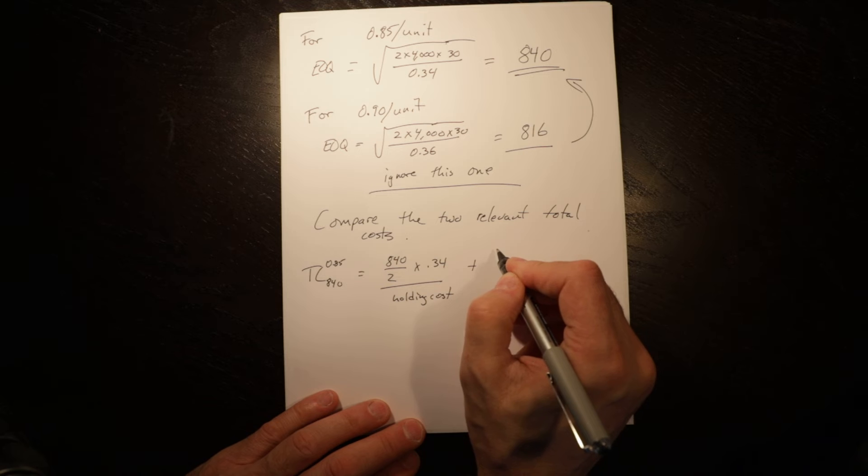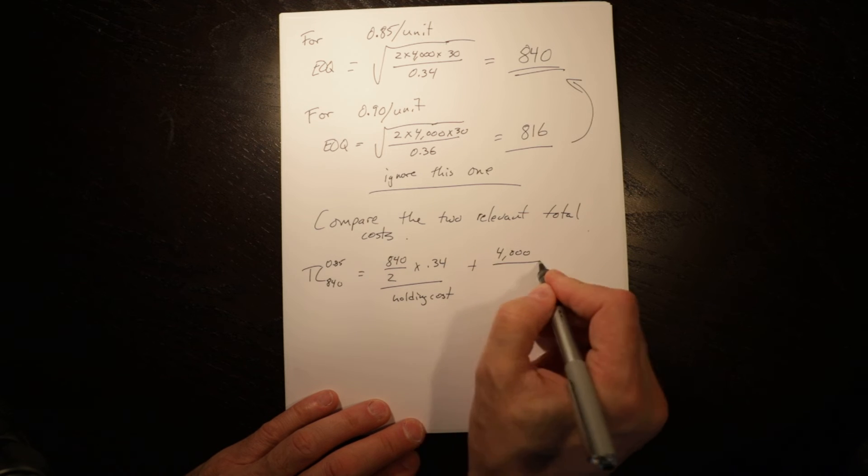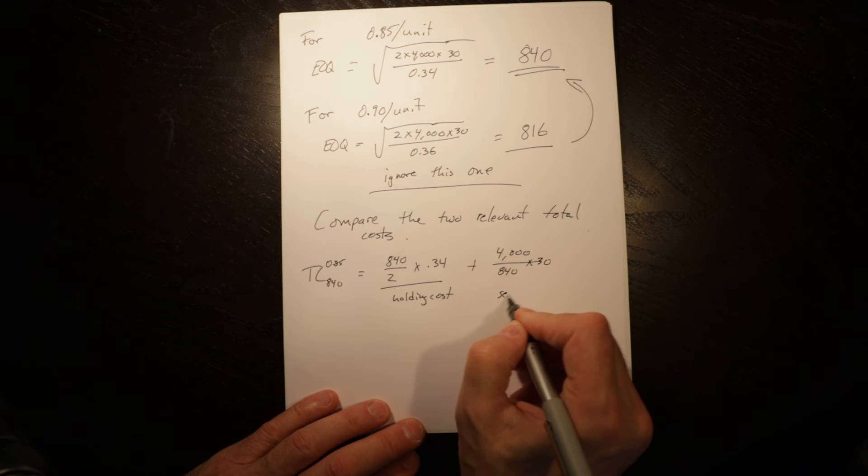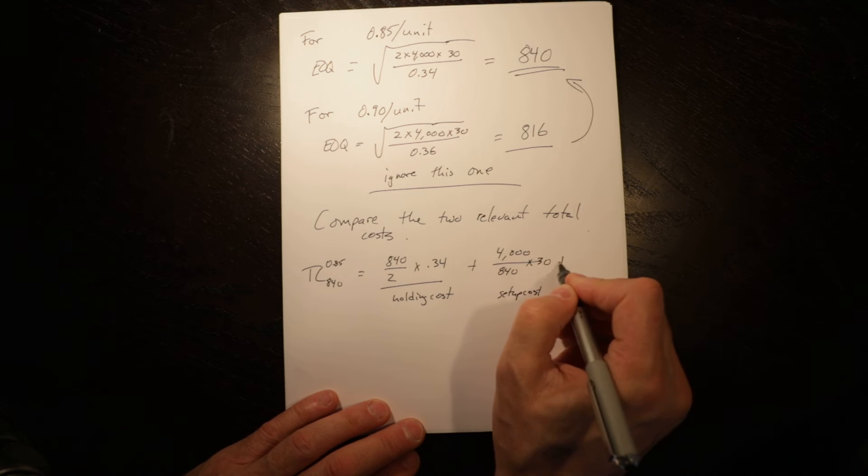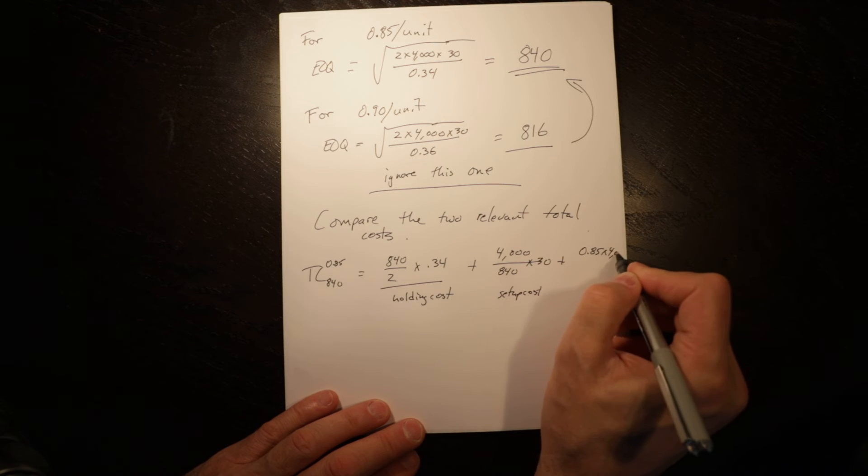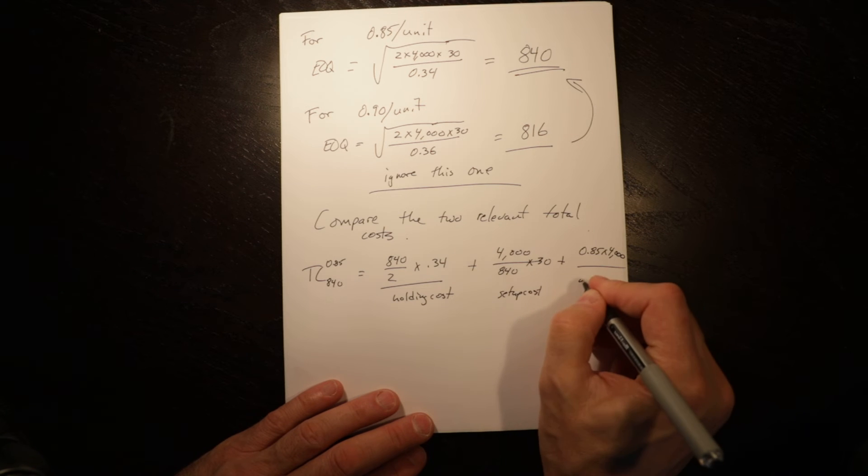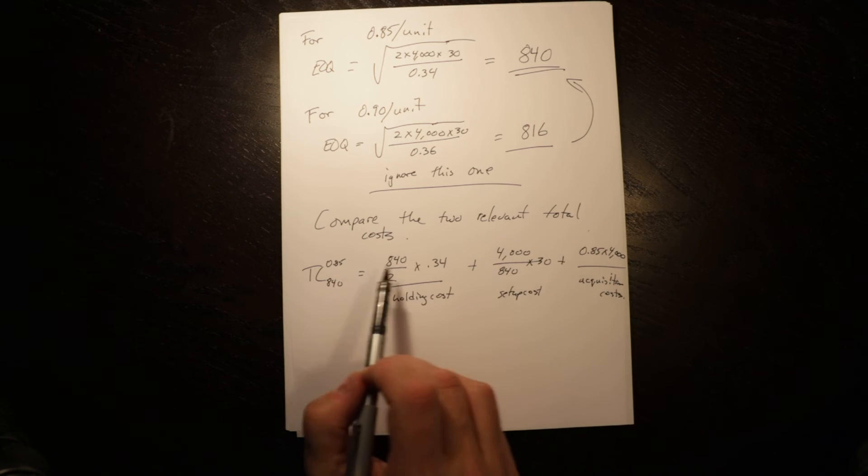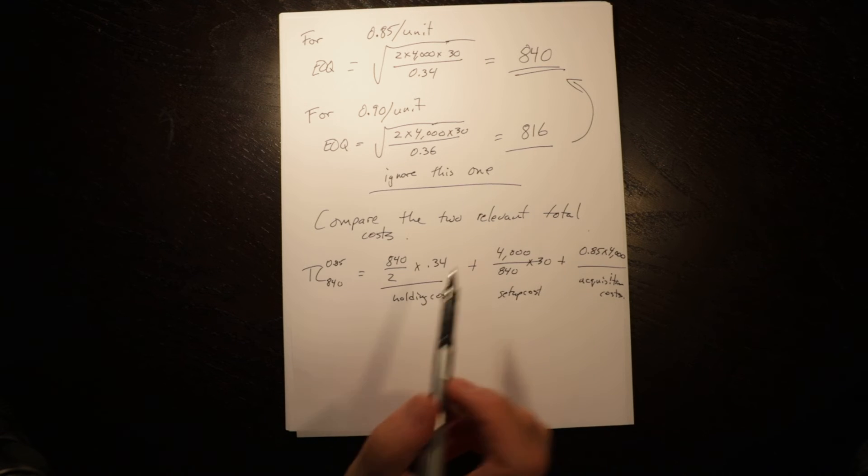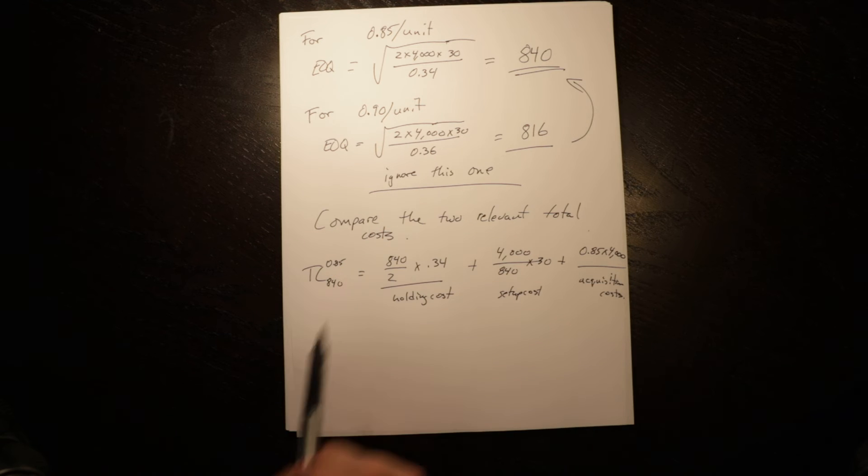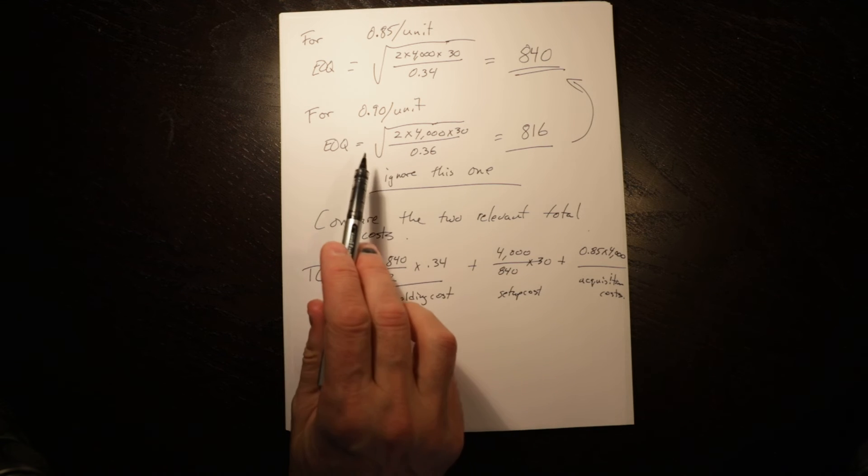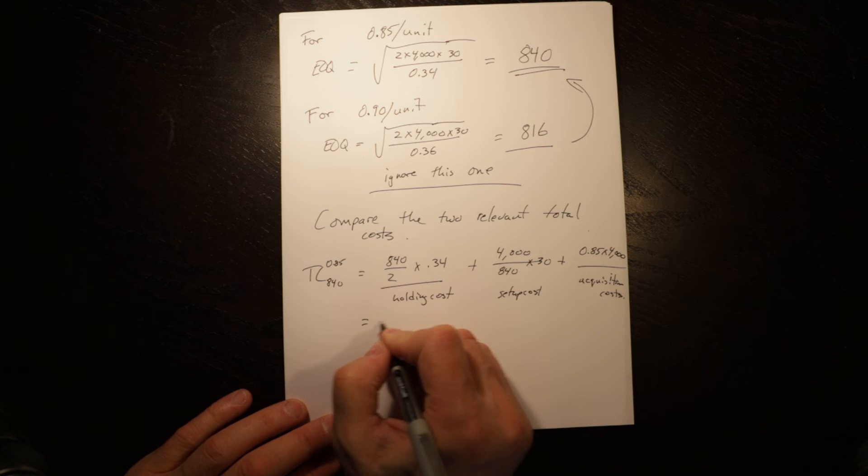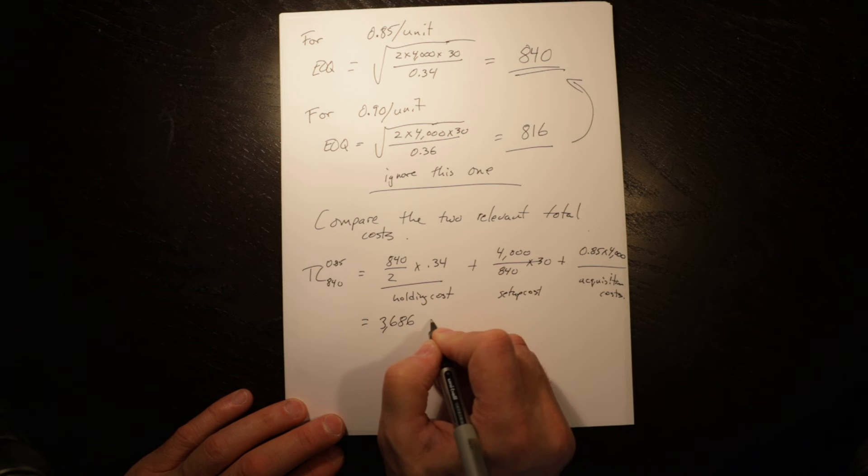That equals 840 divided by 2 times 0.34, that's the holding cost, plus 4,000 divided by 840 times 30, which is setup cost, plus 0.85 times 4,000, which is how much it will cost us to buy them—acquisition costs. That gives us a total of $3,686.